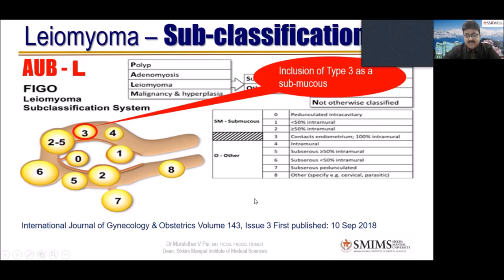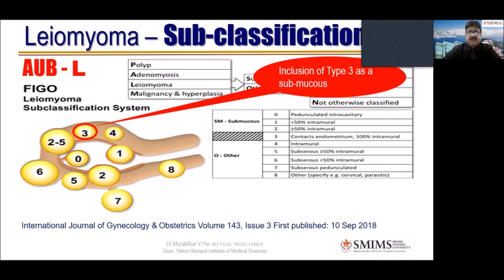What is the surgical importance of this? Although it is purely intramural and we may tackle it like an intramural fibroid, it has been classified as submucous because it may affect fertility, especially if it is on the implantation site. That's the reason it is now classified as submucous.